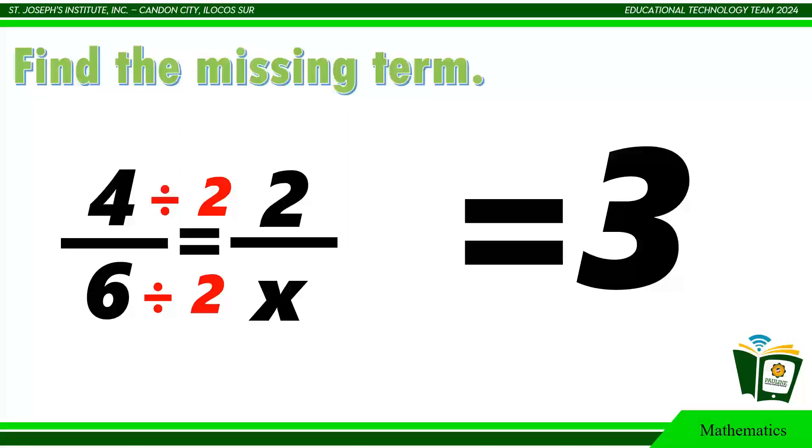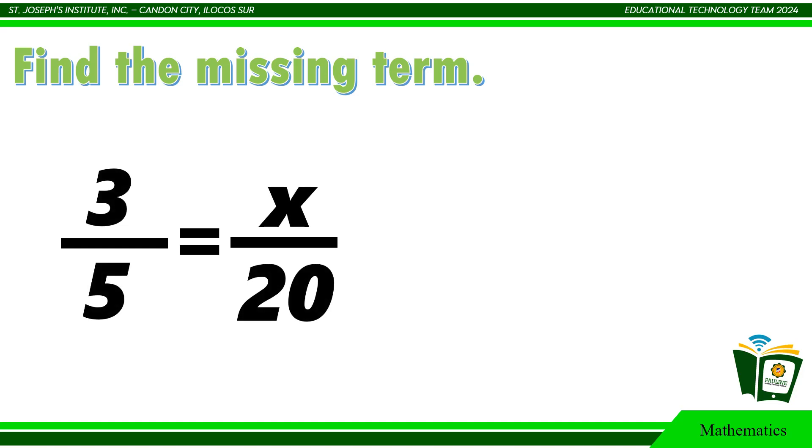Another example. 3 is to 5 equals x is to 20. 5 and 20 are related. 5 can become 20. How? By multiplying it by 4.